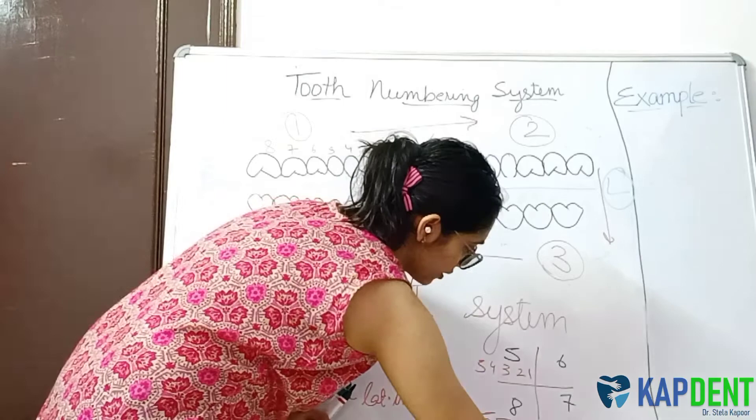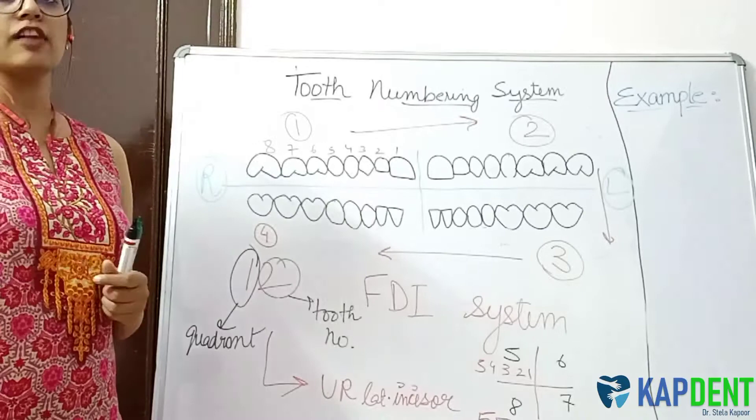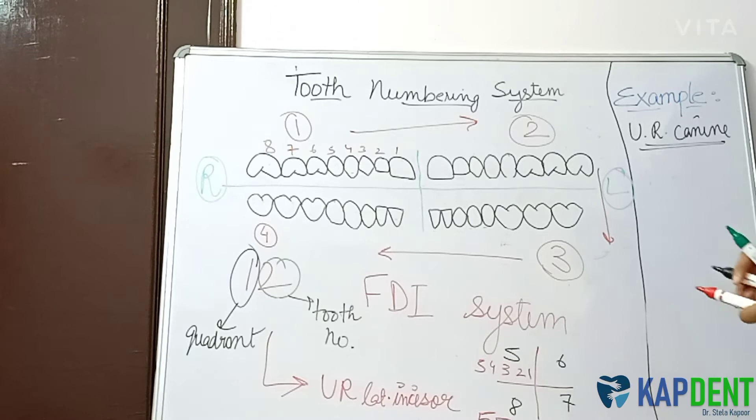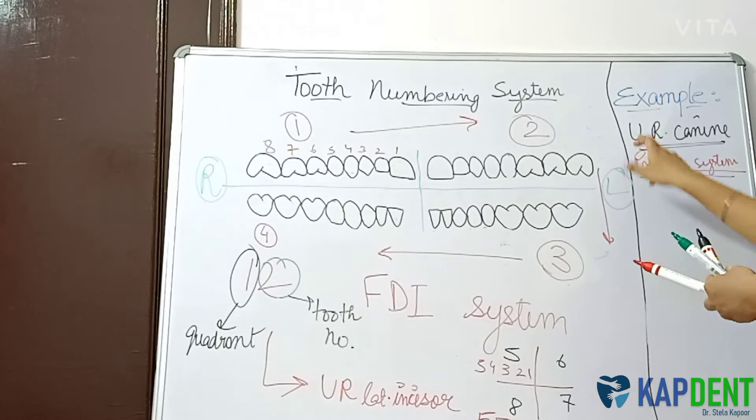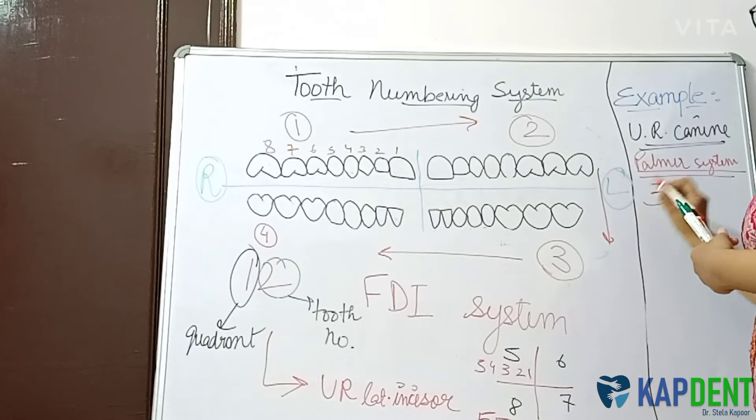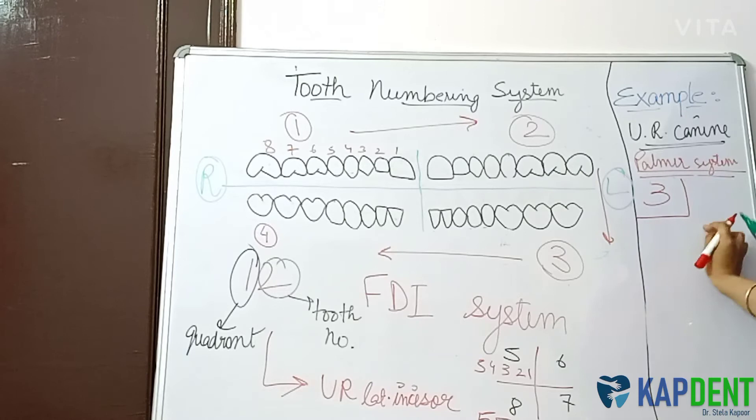To summarize all three systems, let's take a common example: the upper right canine. In the Palmer symbolic system, the canine is the third tooth, so we use the number 3 with the bracket symbol for the upper right quadrant. This is how the upper right canine is denoted in the Palmer system.